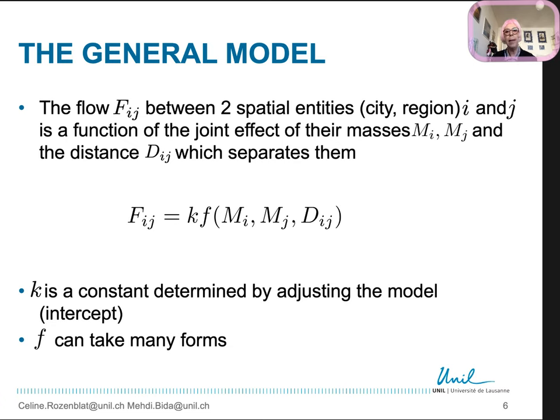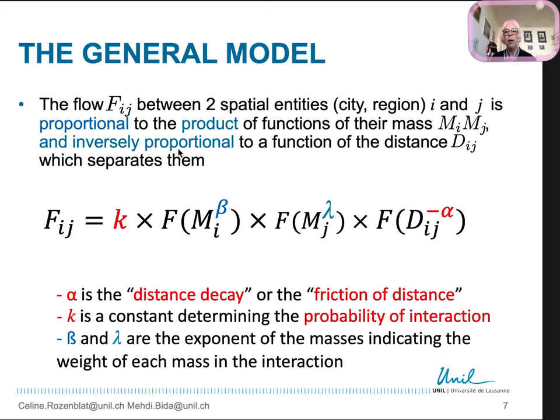The general model considers that the flow F_ij between two spatial entities is both the function of the churn effect of their mass and the distance which separates them. K is the intercept constant determined by adjusting the model. The general model stipulated that the flows F_ij between two spatial entities is proportional to the product or function of their mass and inversely proportional to a function of the distance.